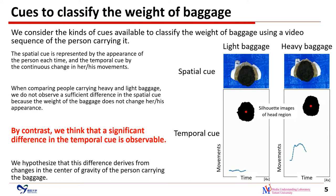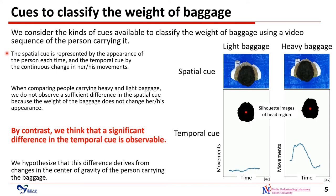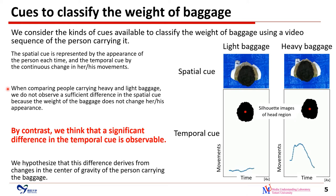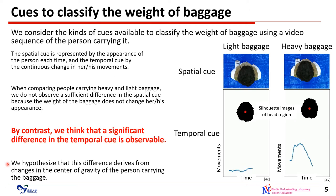We consider the kinds of cues available to classify baggage weight using a video sequence of a person carrying it. A spatial and a temporal cue are observable in such videos. The spatial cue is represented by the appearance of the person, and the temporal cue by continuous change in movements. When comparing people carrying heavy and light baggage, we do not observe a sufficient difference in spatial cue because baggage weight does not change appearance. By contrast, we think a significant difference in the temporal cue is observable, hypothesizing that it derives from changes in the center of gravity.